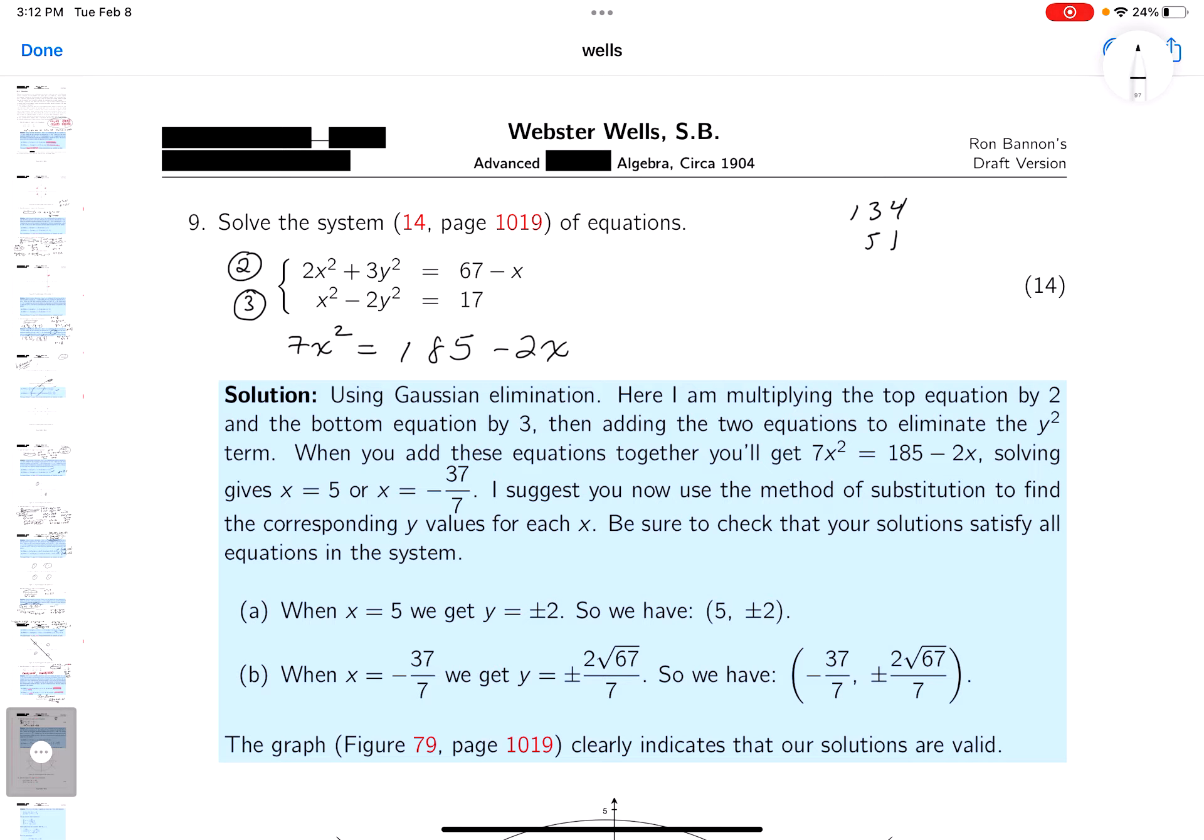So at least I got an equation of one unknown. Now what I mean by that is I could probably solve that in a simple way. It's quadratic, so it's going to be 7x squared plus 2x minus 185 equals zero. I've got to do my best job of trying to do that.